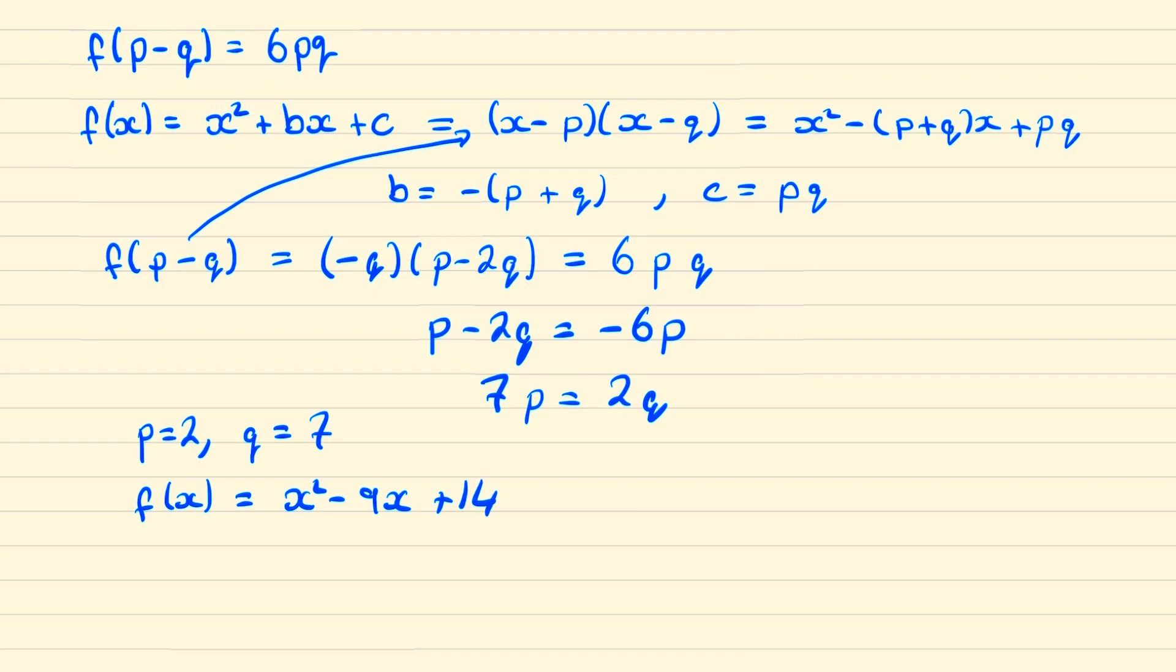We also have another possibility: if the primes are negative, then p = -2 and q = -7. Substituting these back in for b and c, we show that the function f equals x² + 9x + 14, and so we're done.